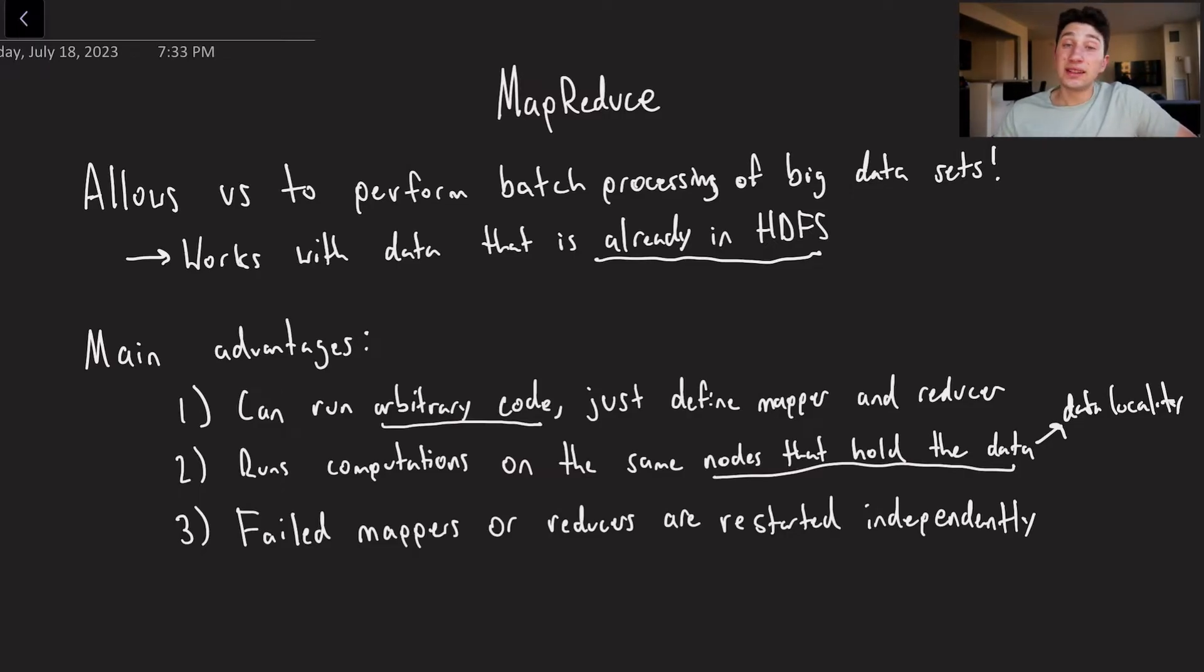Where if just one node or just one part of this batch job fails, we only have to restart that failed part as opposed to restarting from scratch, which is hugely important when you have so many failures and so many preempted tasks.